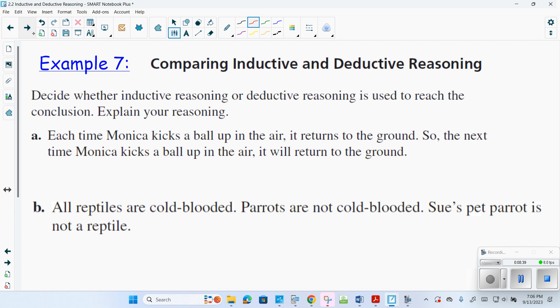Comparing inductive and deductive. Inductive means that you're just making a conjecture, you're making a logical guess. Deductive is you're using laws or properties or given rules. Each time Monica kicks the ball up in the air, it returns to the ground. So the next time Monica kicks the ball up in the air, it will return to the ground. I would consider that to be deductive only because it's gravity. So there's a rule, there's a law, there's a property involved that once something goes up, it must come down. All reptiles are cold-blooded. So that's a rule. Parrots are not cold-blooded. Sue's parrot is not a reptile. That is definitely deductive.